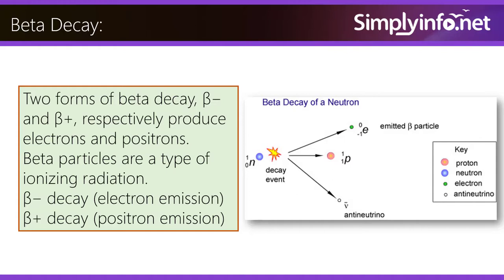Beta negative decay: electron emission. Beta positive decay: positron emission.